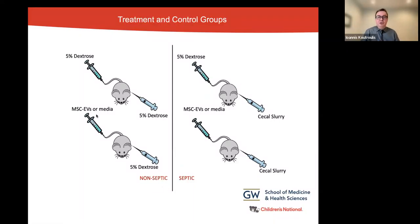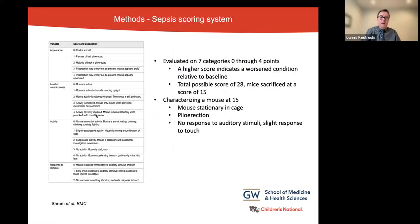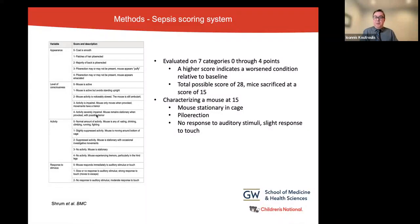We had four different groups: two septic and two control non-septic groups. Septic mice received either mesenchymal stem cell-derived EVs or media, and control mice received either EVs or media. We use a validated sepsis scoring system to clinically assess mice after injections. This scoring system includes seven different parameters: appearance, level of consciousness, activity, response to stimuli, respiratory rate, respiratory quality, and eye appearance. Maximum score for each parameter is four, and maximum total score can be 28. A higher score indicates a worsened condition compared to baseline.